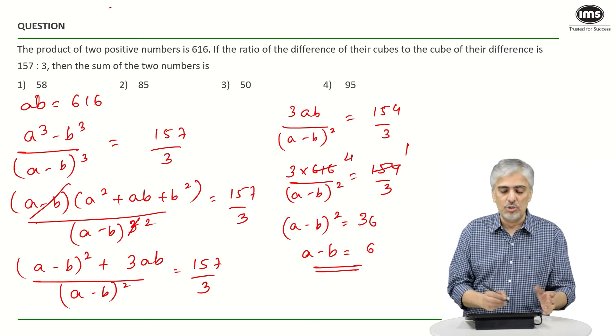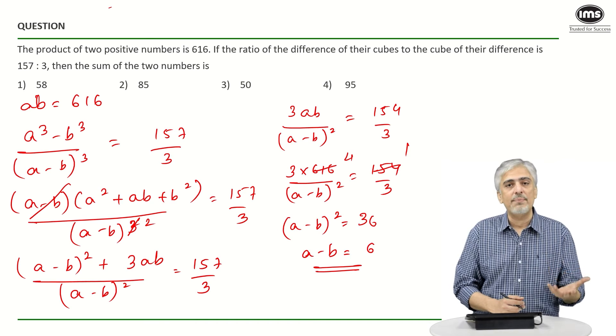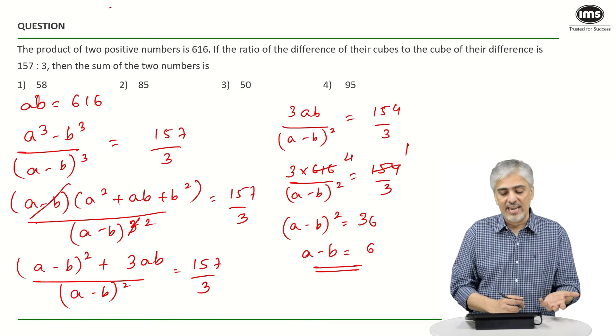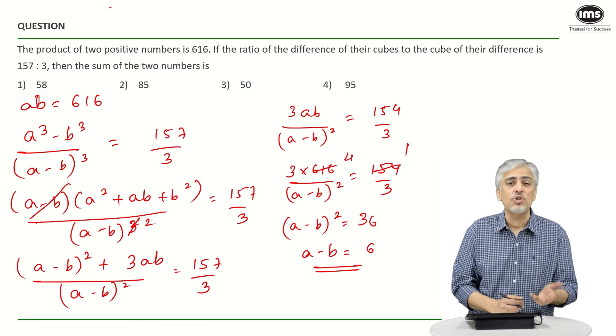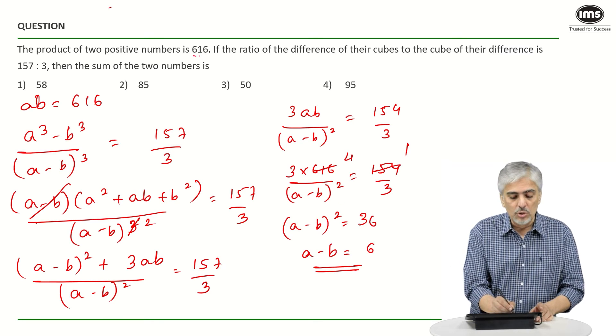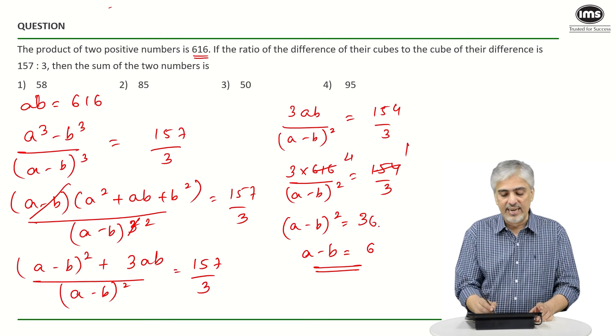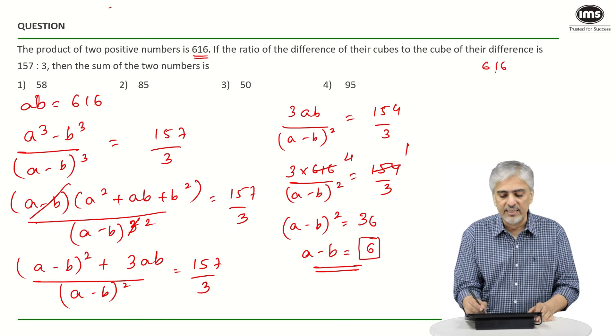Now after this you can do it orally or you can use formulas. You could have used (a plus b)² is (a minus b)² plus 4ab. But very frankly I don't think all that should have been needed. After this step I just need two numbers whose product is 616 and their difference is 6.